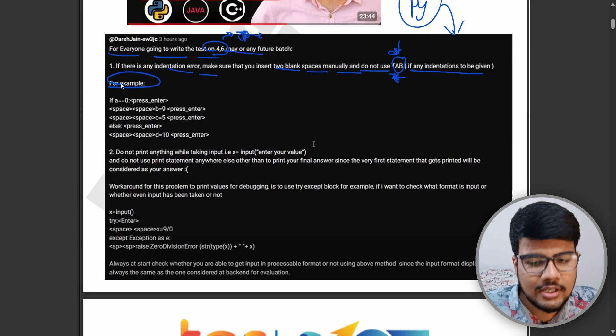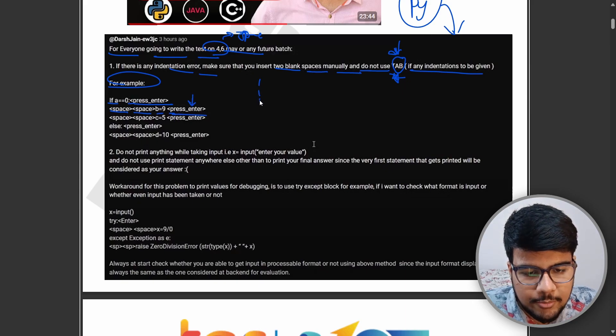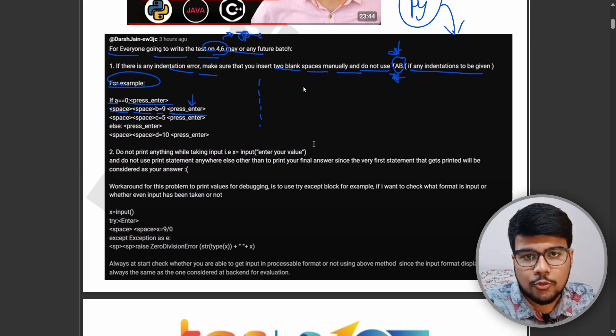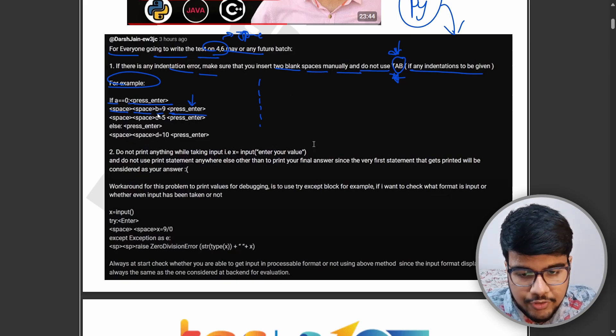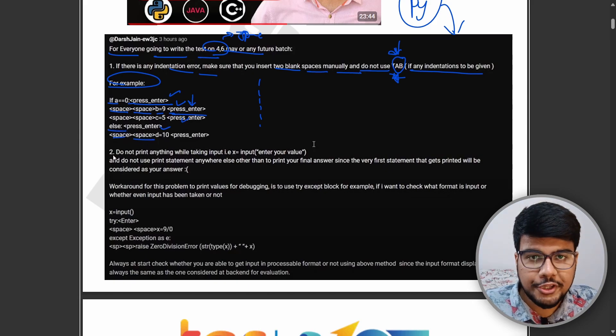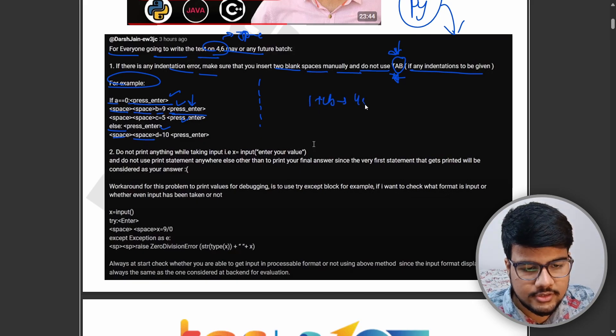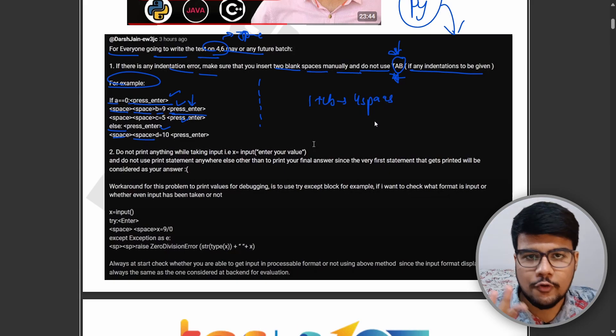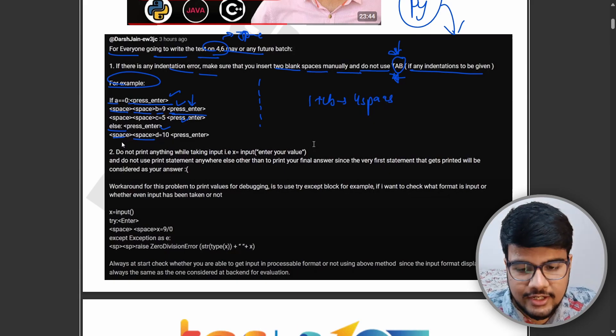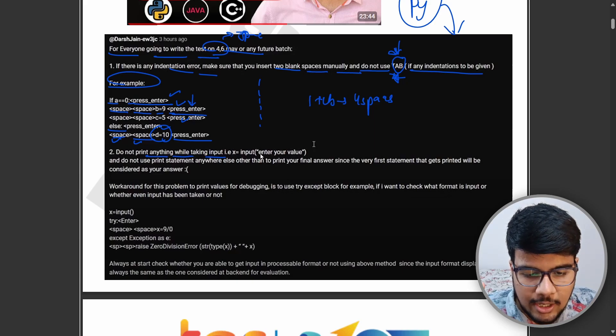This is very important news you need to follow. If indentation is to be given, let's say for example, 'if a is equal to 0', press Enter, now space space, 'b is equal to 9', press Enter. Why Enter? Because people usually create multiple lines in the compiler and start moving their mouse to write the code, but don't do that. For every line, press Enter. 'Else', press Enter, space space. Don't use Tab because people have a habit of pressing Tab since one Tab will give you four spaces.